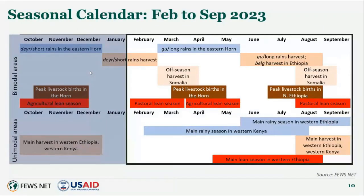With that context, looking into our projection period spanning February to September of this year: the Gu or long rains over the eastern Horn in bimodal areas will occur, with livestock births during this time and crop harvest occurring mid-year. In unimodal areas — roughly western Ethiopia and western Kenya — the main rainy season will occur, as will the start of harvest in most areas. Throughout this projection period, there will be several lean seasons, with timing differing by country and livelihood system, and these will be a primary component of the outlook period.